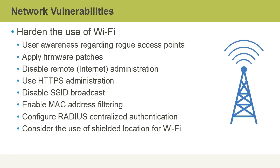We should always apply firmware patches to our Wi-Fi routers. We should also consider disabling remote internet administration and use HTTPS administration. We should consider disabling the broadcast of the wireless network name or SSID. Even though MAC addresses can be spoofed, we should still enable MAC address filtering. Wireless routers should never do their own authentication — instead they should forward it to a centralized RADIUS server. We might even consider using a shielded location for Wi-Fi to prevent radio signals from emanating beyond a specific area.